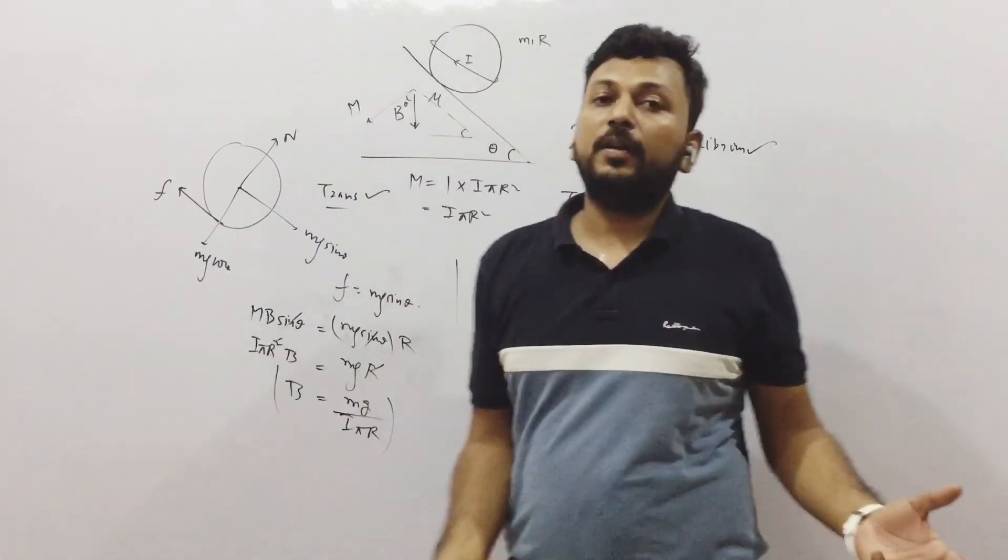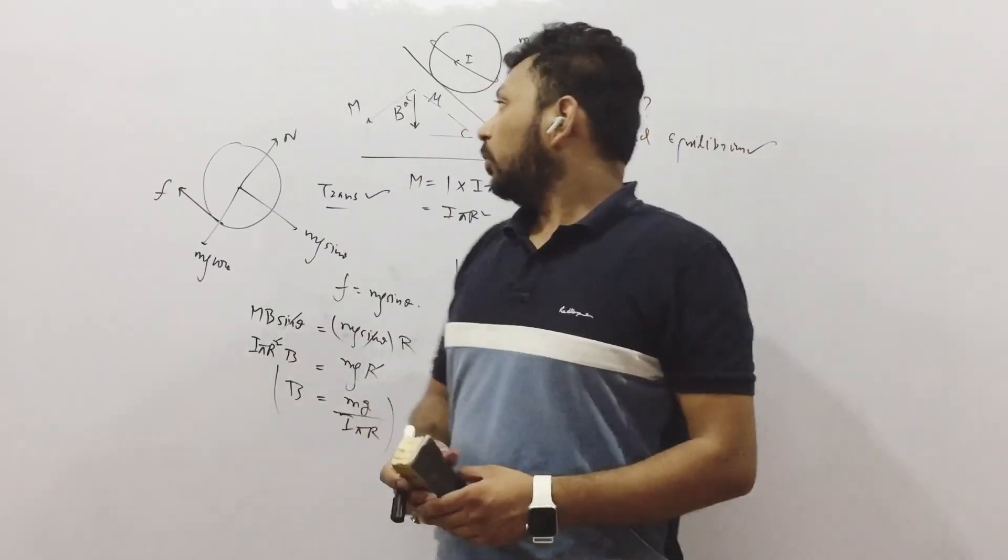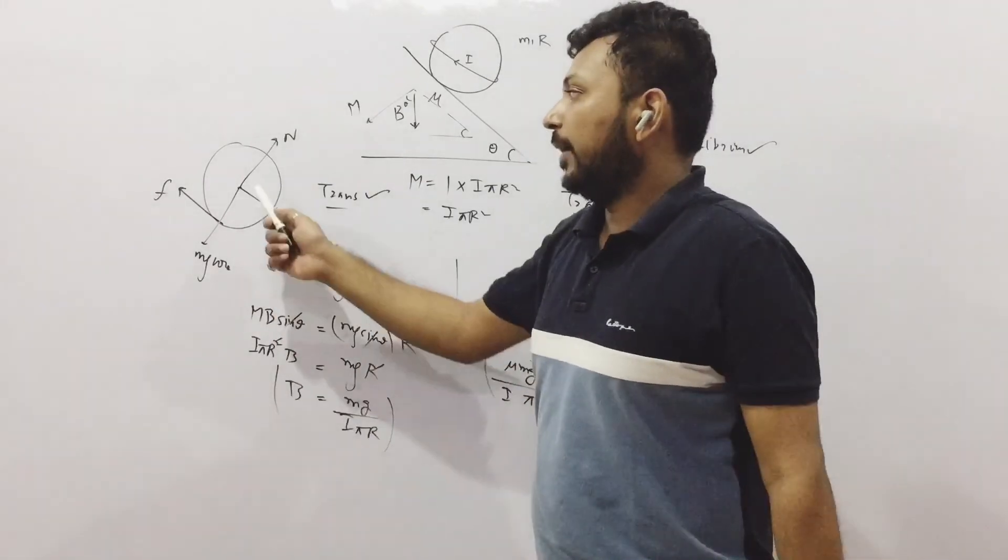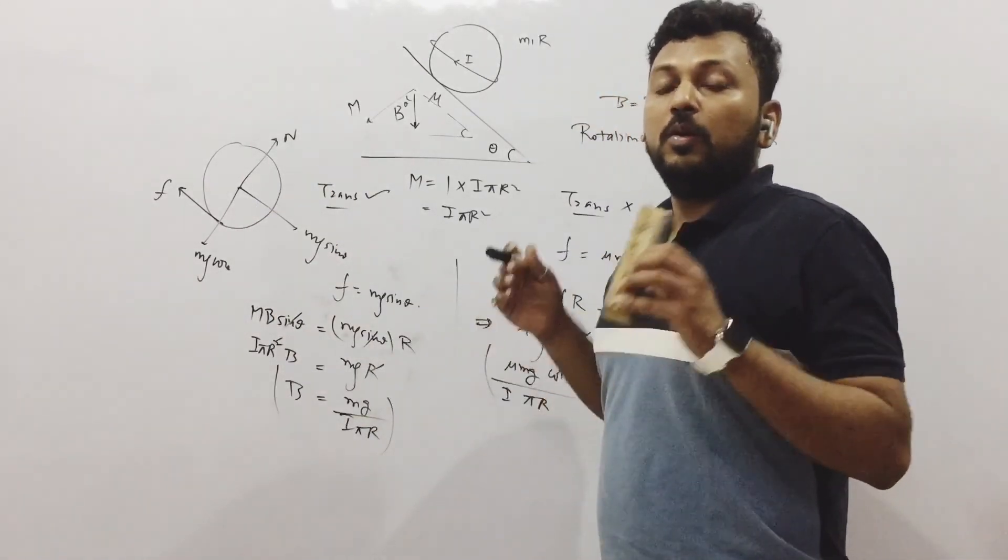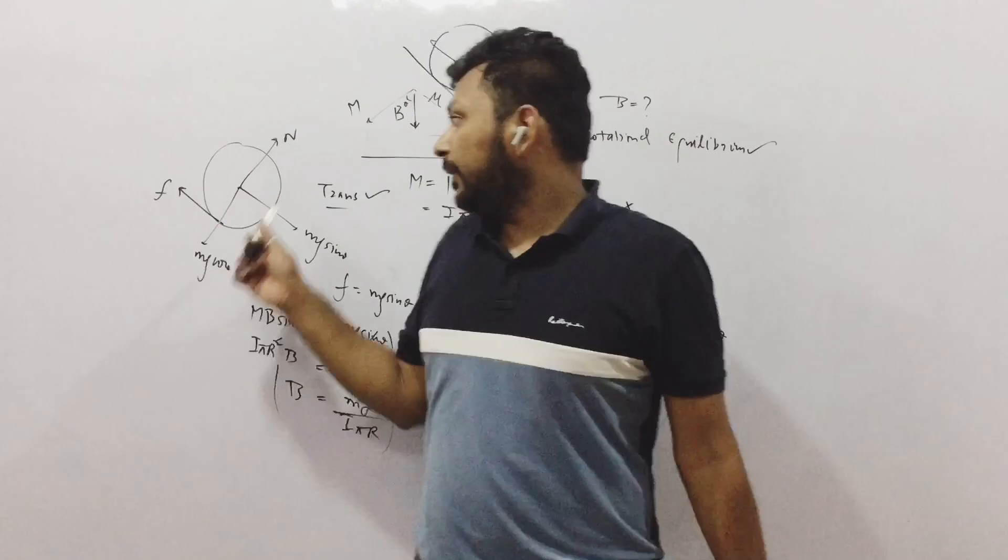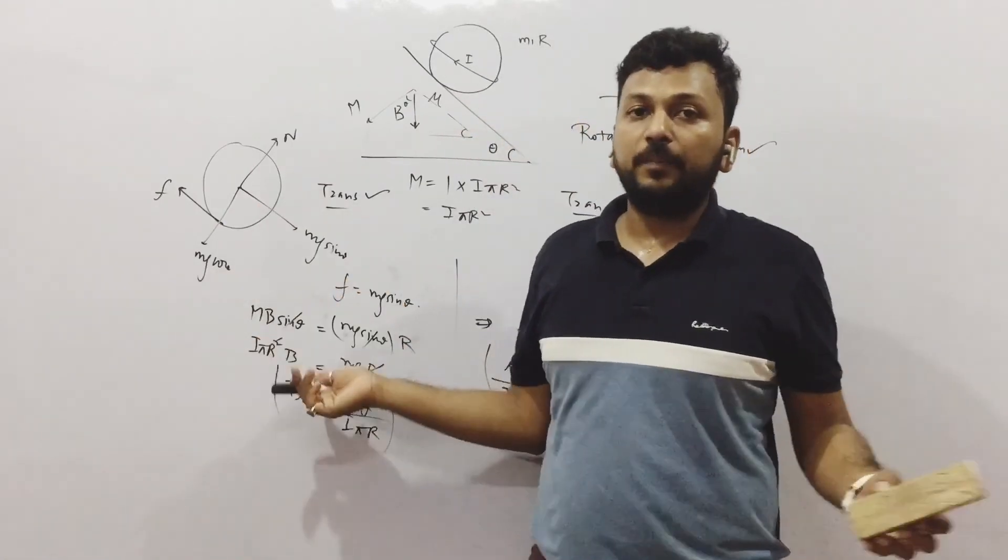And finally we just equated the torque of friction with the torque of magnetic field. There was no torque of these three forces as they were acting in the center. Torque is equal to force times perpendicular distance. In these cases perpendicular distance is zero.